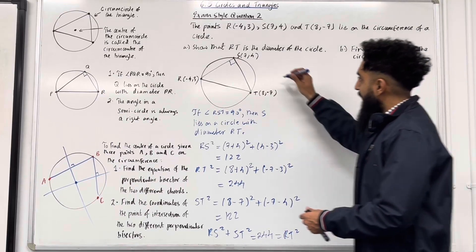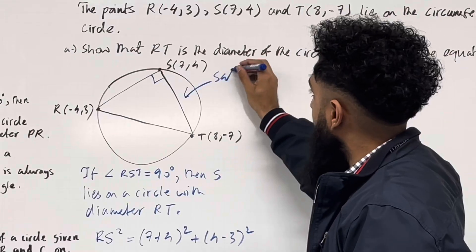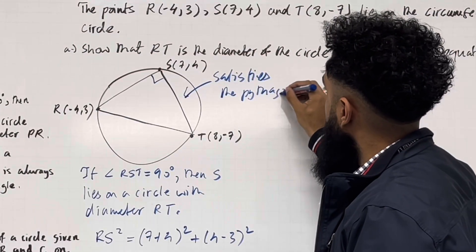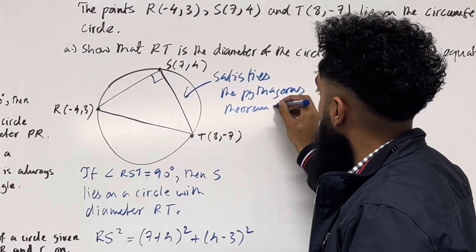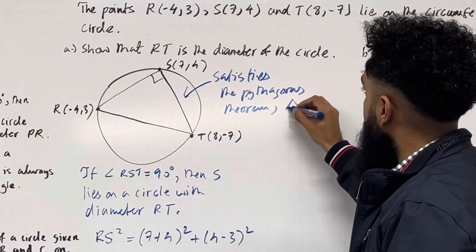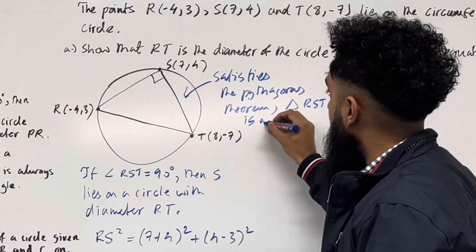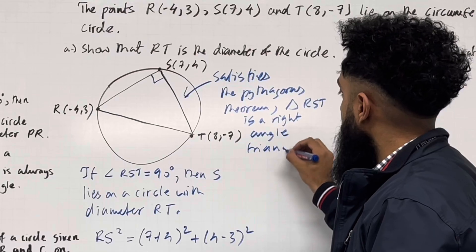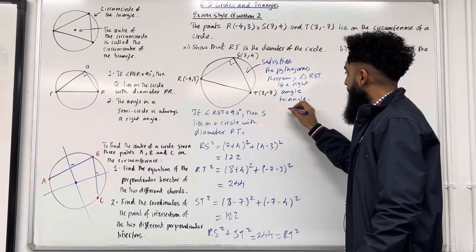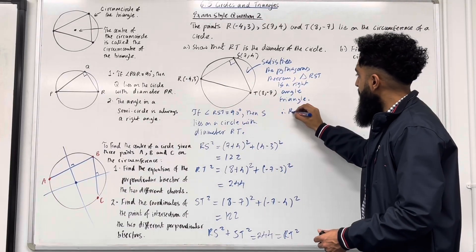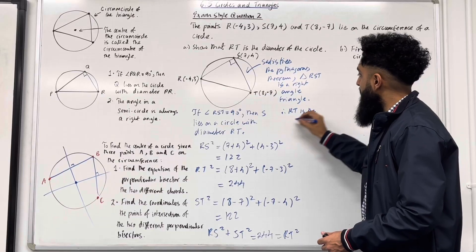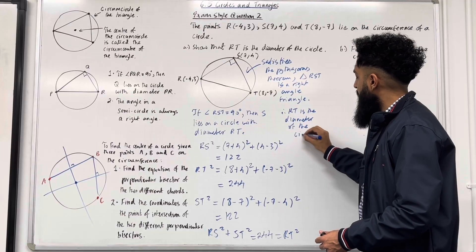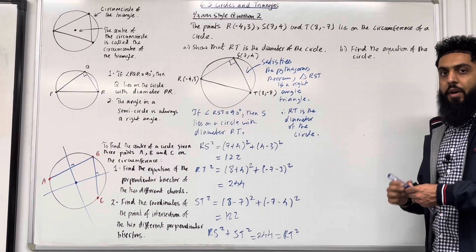Since this triangle satisfies the Pythagorean theorem, triangle RST is a right-angled triangle. Therefore RT is the diameter of the circle. That completes part A of the question.